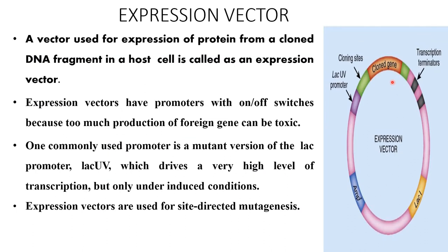A vector used for the expression of protein from a cloned DNA fragment in a host cell is called an expression vector. Expression vectors have a promoter with on and off switches because too much production of foreign gene can be toxic. One commonly used promoter is a mutant version of the lac promoter, that is lac UV5, which drives a very high level of transcription but only under induced conditions. Expression vectors are used for site-directed mutagenesis.